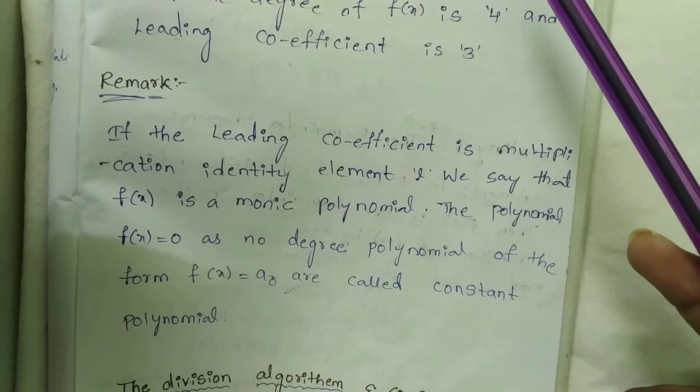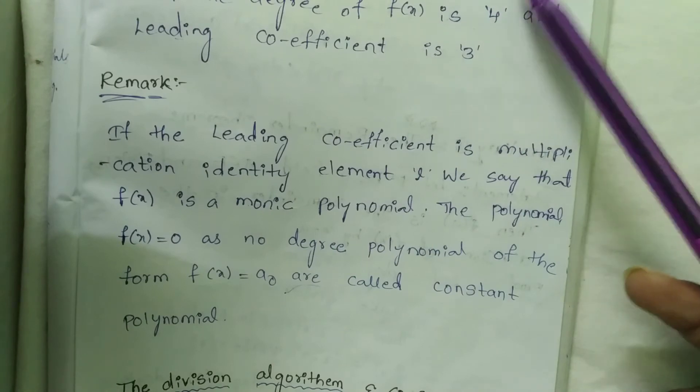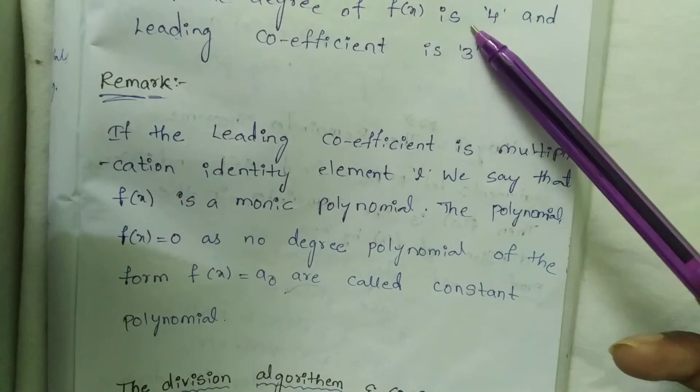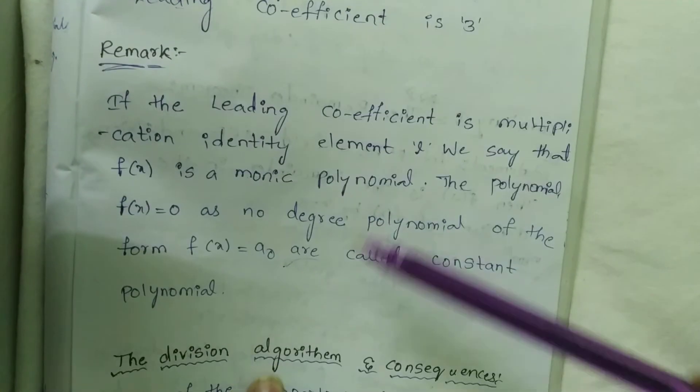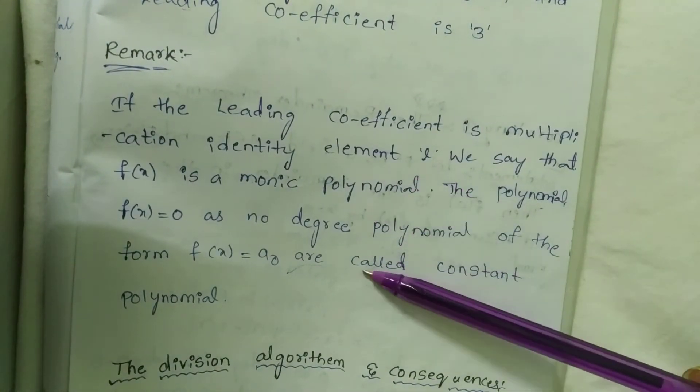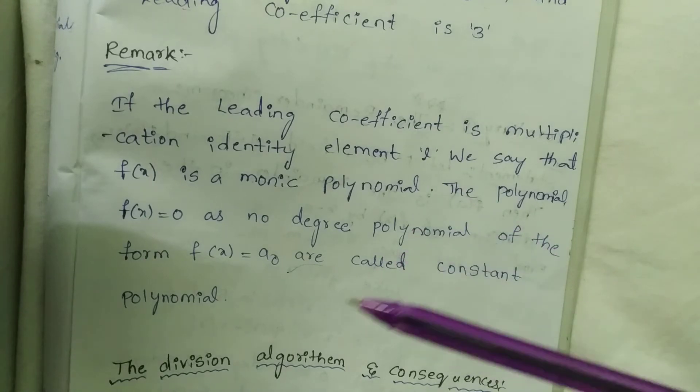Polynomial of the form f(x) = a₀ are called constant polynomials. If we choose the highest degree of f(x), the degree equals zero. If we choose the remarks and examples, then we will clear the definition.